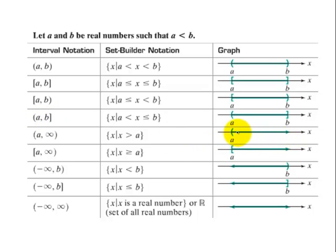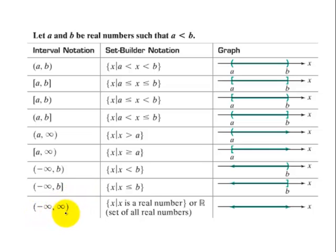For a graph extending to infinity starting at A with all values greater than A, we write (A, ∞) using a parenthesis. If it can equal A, we use [A, ∞) with a bracket. For values from negative infinity up to some value B, we write (−∞, B] if it can equal B, using a bracket for B. The last case — all real numbers — is written as (−∞, +∞) in interval notation, representing all numbers on the number line.